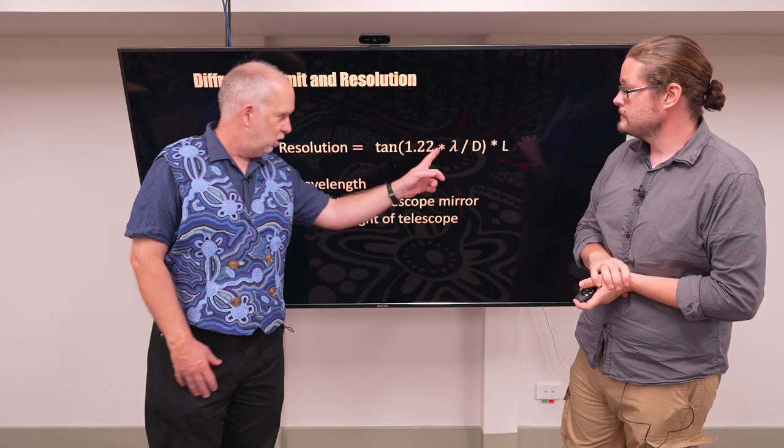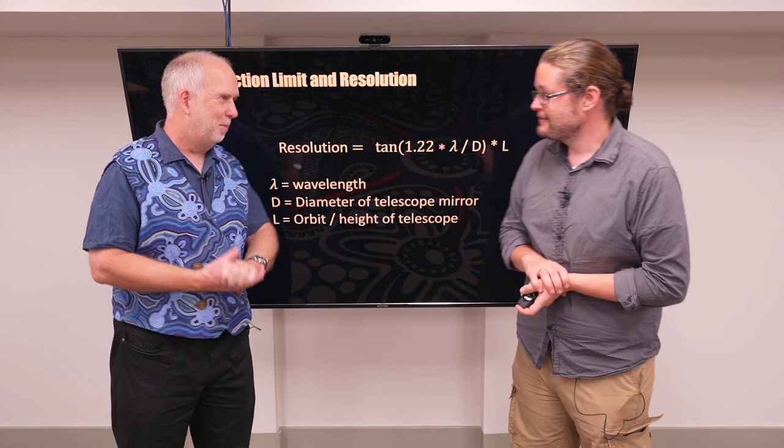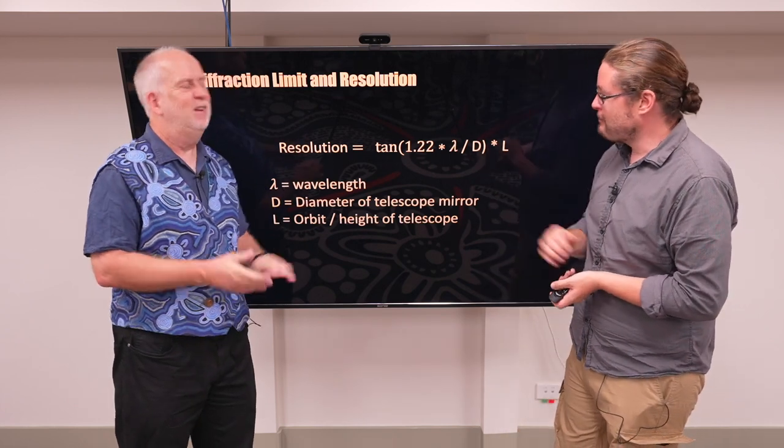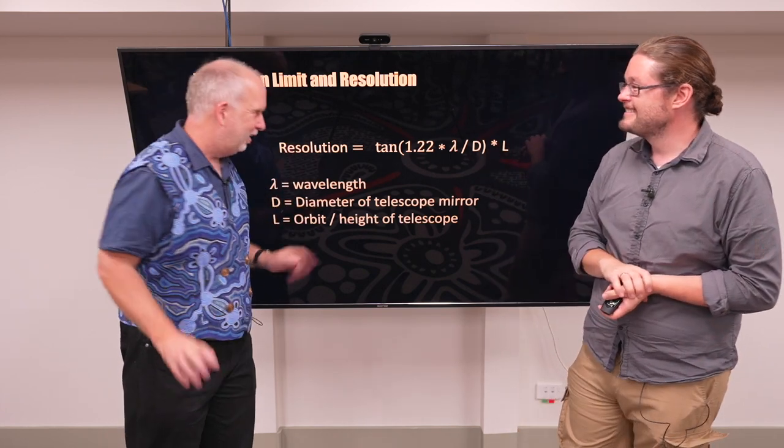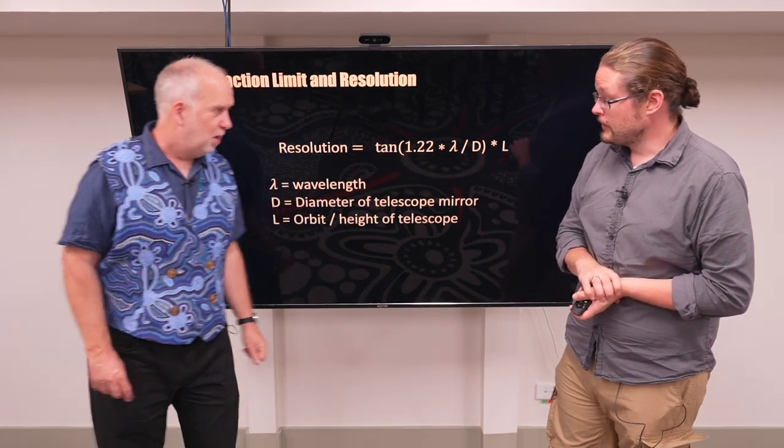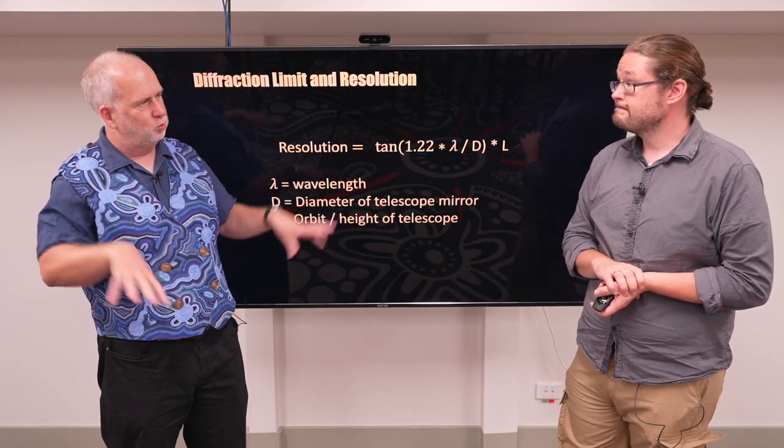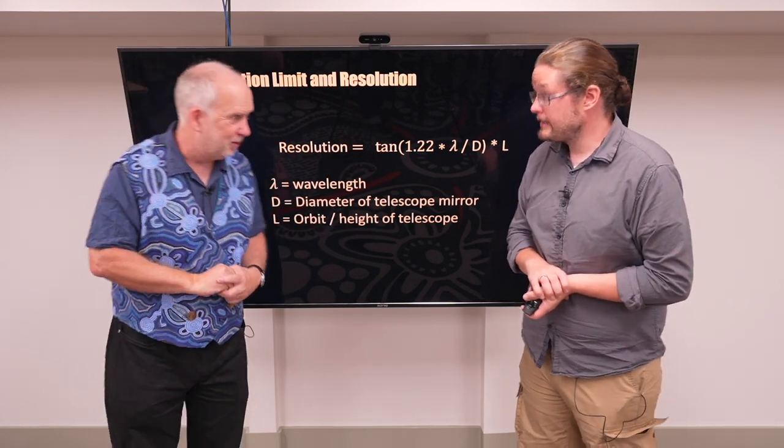Okay. So we've taken the previous equation. We've used a bit of trigonometry. This is a tan for those who remember their trigonometry from school. For the most part, it just goes away. It's a button on your calculator. And we've now multiplied by the height of the spacecraft. Because even if you've got the same resolution and you're further away, that's going to correspond to a bigger actual physical scale.